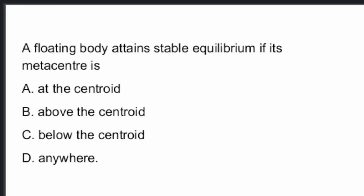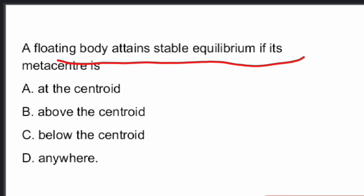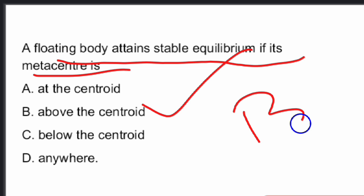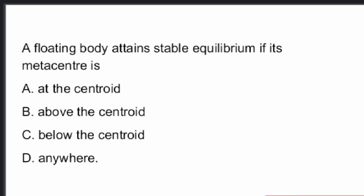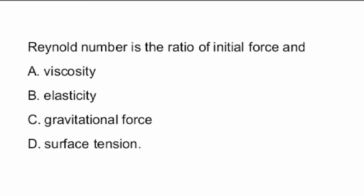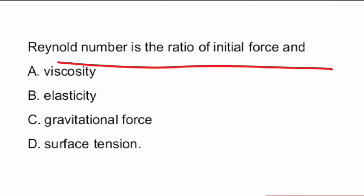Next question: A floating body attains stable equilibrium if its metacenter is where? The answer is Option B — above the centroid. A floating body attains stable equilibrium if its metacenter is above the centroid.